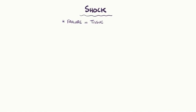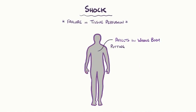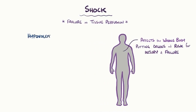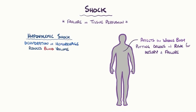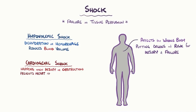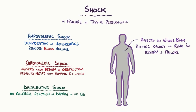As a quick recap: shock is ultimately a failure in tissue perfusion that affects the whole body, putting tissues and organs at risk for injury and ultimately organ failure. Hypovolemic shock happens when dehydration or hemorrhage reduces the volume of blood in the blood vessels. Cardiogenic shock happens when a direct injury like a heart attack, or an obstruction like a pericardial effusion, prevents the heart from pumping blood efficiently. Distributive shock happens when something like an allergic reaction or damage to the nervous system causes blood vessels to vasodilate and become leaky, which reduces resistance and lowers blood pressure.